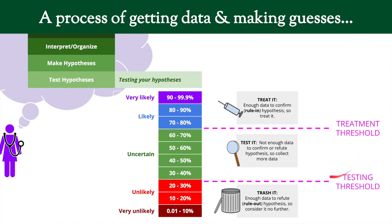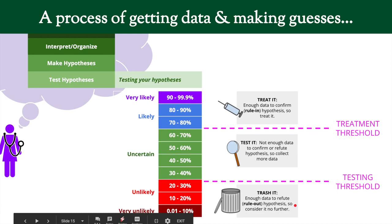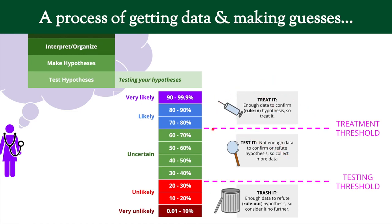Where you set those boundary points between the zones depends on many different things. If it's dangerous to miss a disease, you don't want to rule it out until you're very sure — maybe you need to be only 2% sure they don't have it before ruling out a potentially deadly disease. If it's something with less consequence, like the common cold, maybe 30% certainty is enough to rule it out. The same logic applies on the treating end — you set the threshold at different levels.